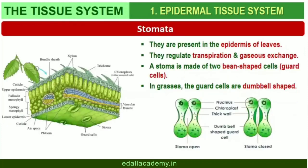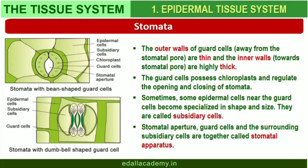Stomata are structures present in the epidermis of leaves. Stomata regulate the process of transpiration and gaseous exchange. Each stoma is composed of two bean-shaped cells known as guard cells which enclose the stomatal pore. In grasses, the guard cells are dumbbell-shaped. The outer walls of guard cells, away from the stomatal pore, are thin and the inner walls, towards the stomatal pore, are highly thickened. The guard cells possess chloroplasts and regulate the opening and closing of stomata. Sometimes, a few epidermal cells in the vicinity of guard cells become specialized in their shape and size and are known as subsidiary cells. The stomatal aperture, guard cells, and the surrounding subsidiary cells are together called the stomatal apparatus.